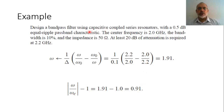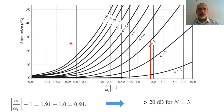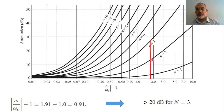Now, according to the required specification, we are talking about equal ripple 0.5 dB. We are going to use the chart of equal ripple 0.5 dB. If the order of the filter is 2, the attenuation would be less than 20 dB. If the order of the filter is 3, it would be greater than 20 dB.